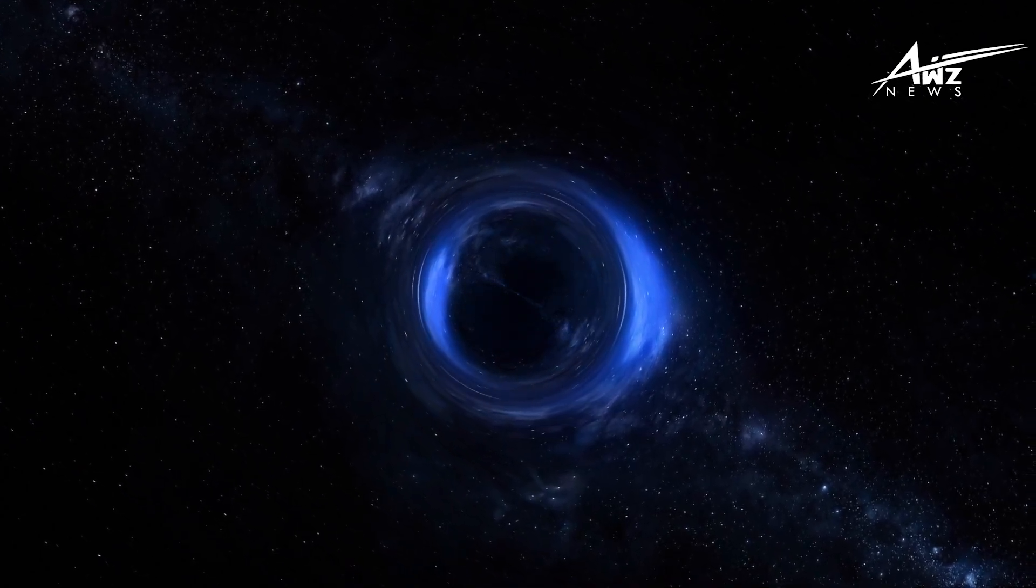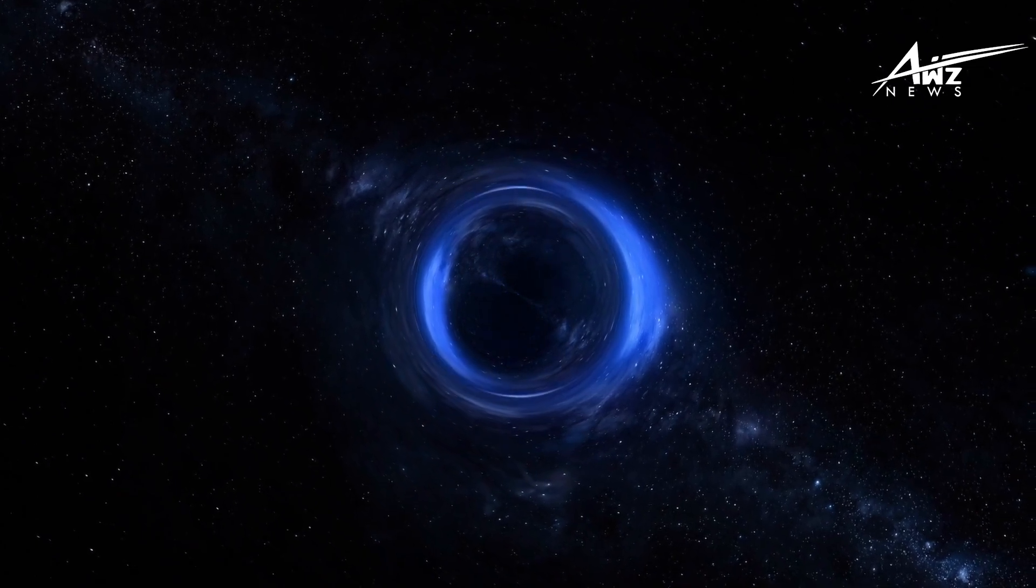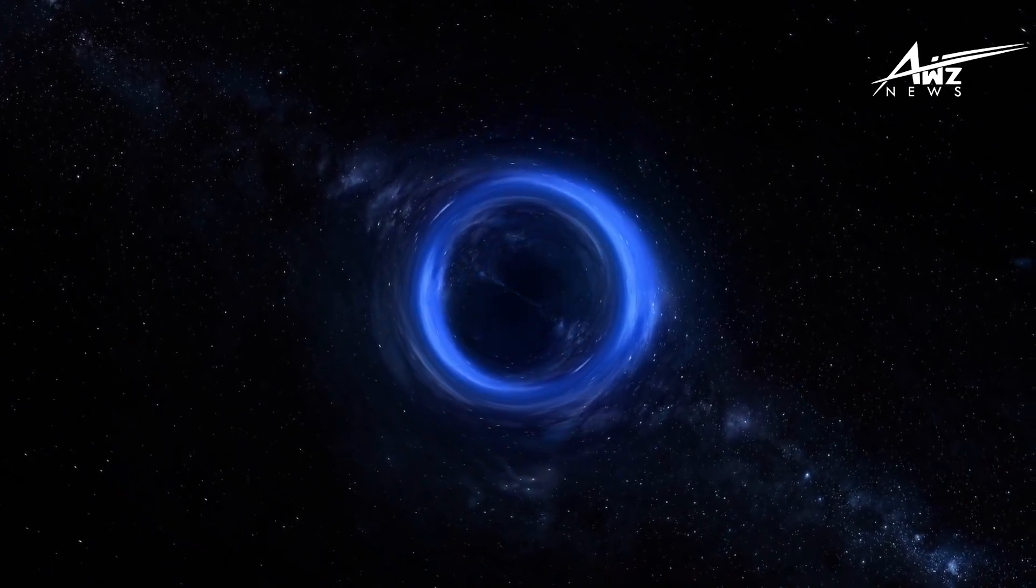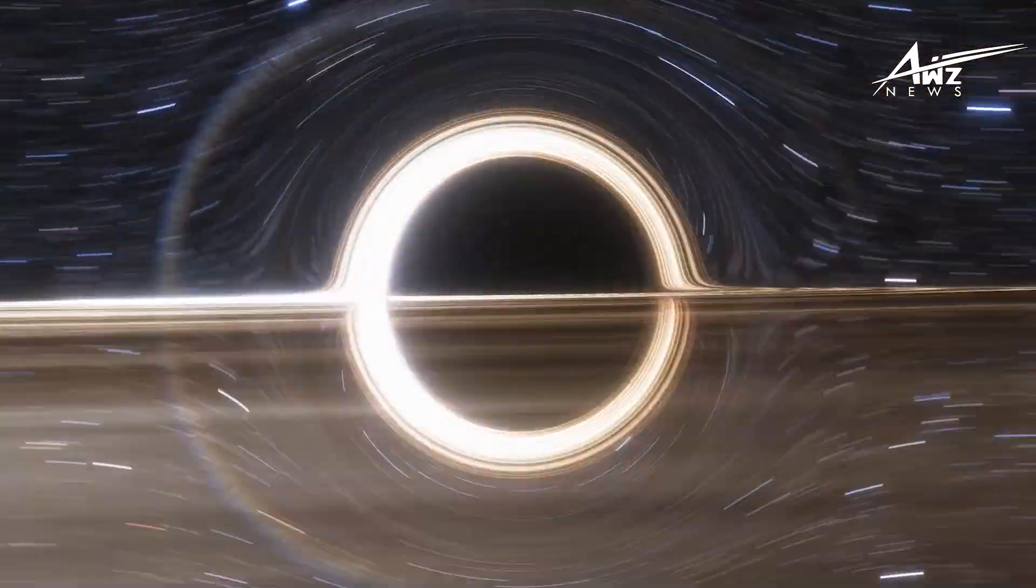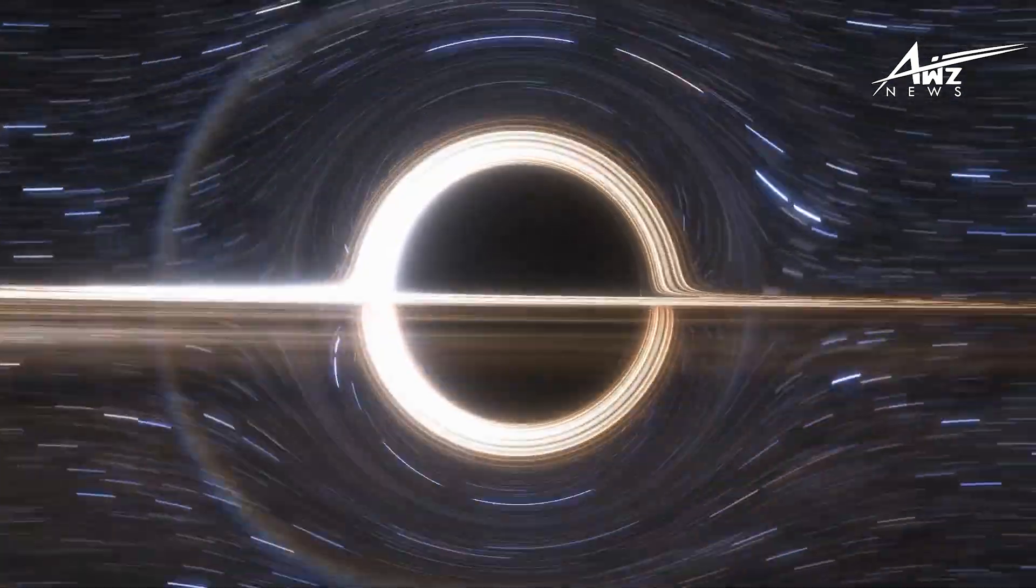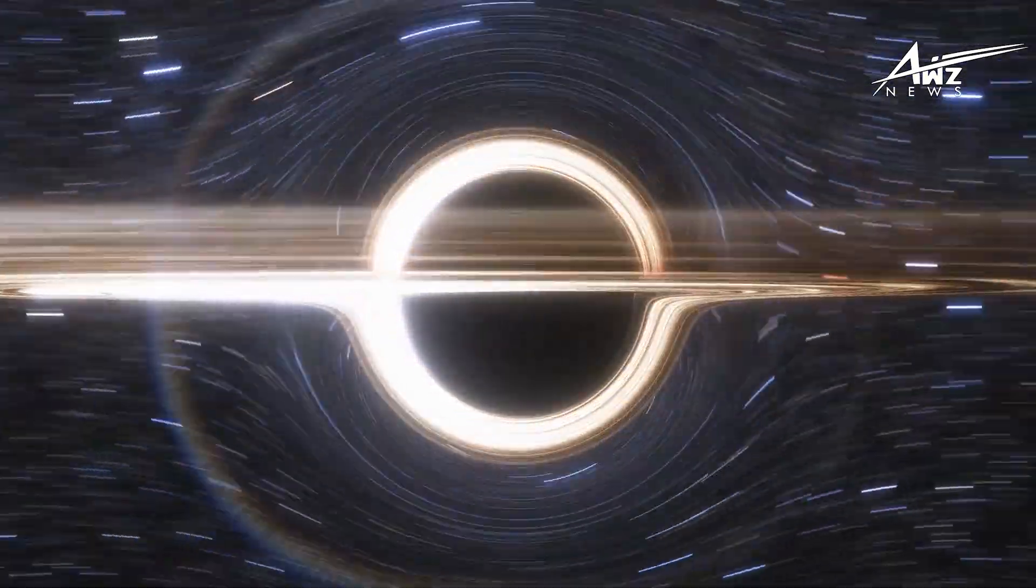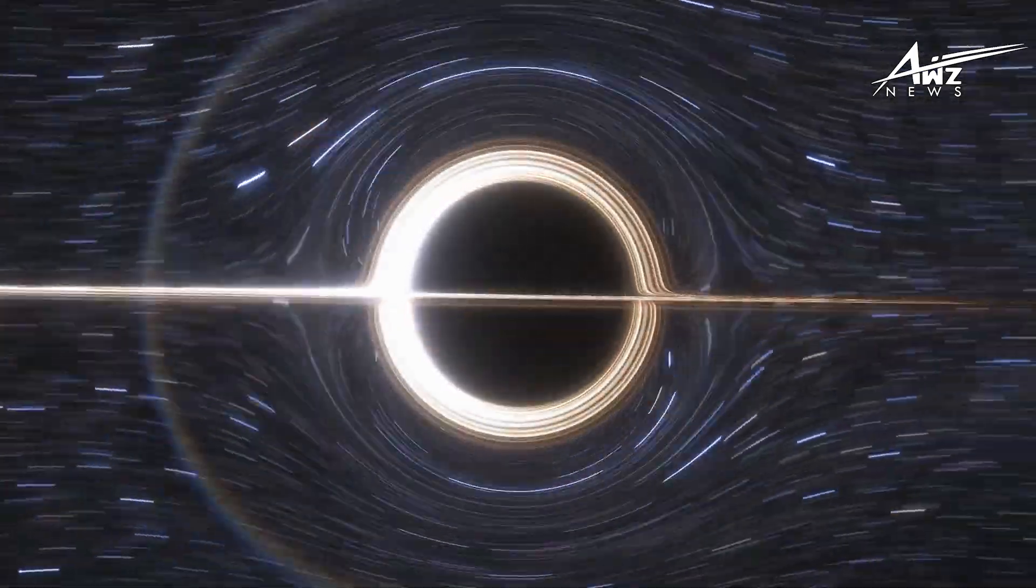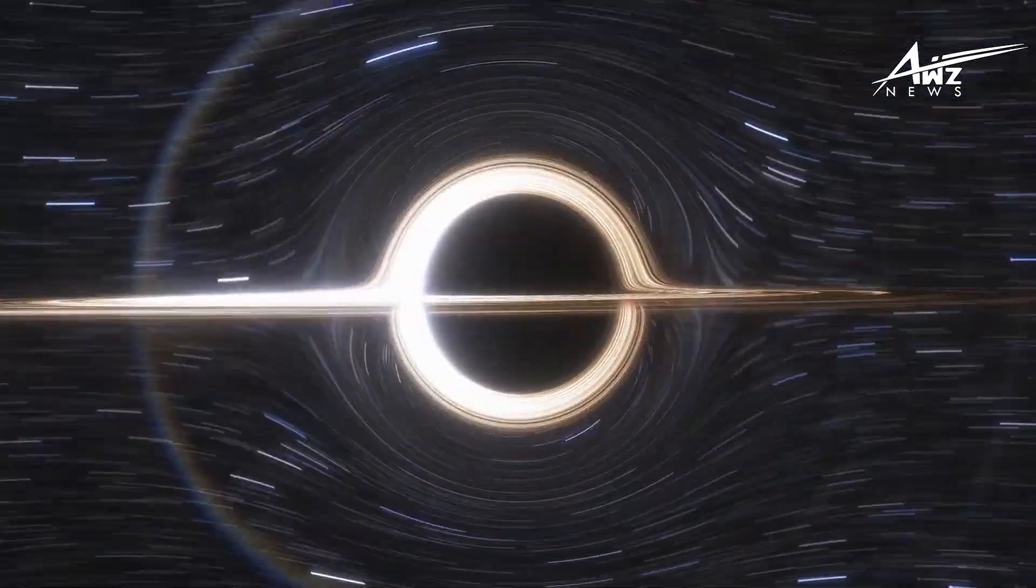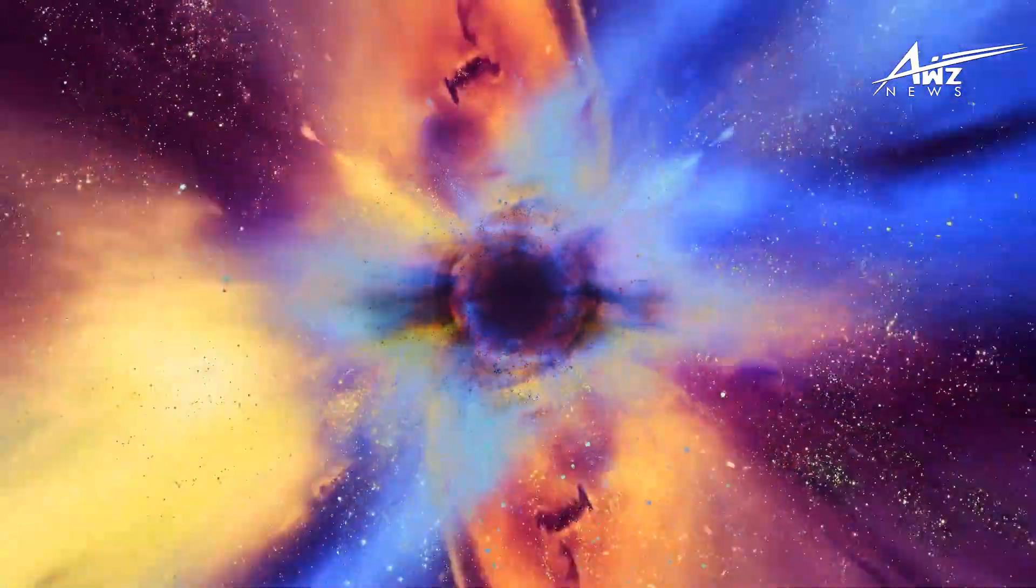But wait a minute, if there is gravity in space around the planet, why do astronauts look like they are floating around in zero gravity? The reason astronauts appear to be floating in space is because everything, including the International Space Station, is falling together simultaneously in the vacuum of space. This phenomenon, known as microgravity, makes it appear as though people and objects are weightless.